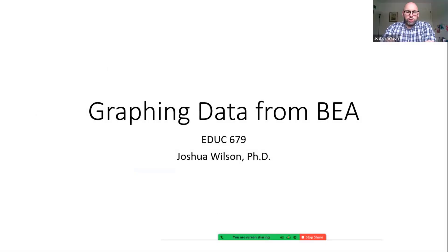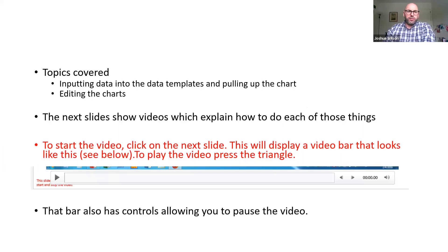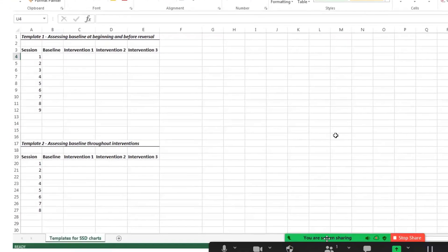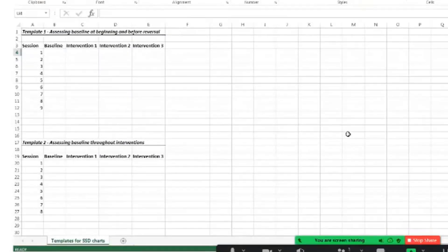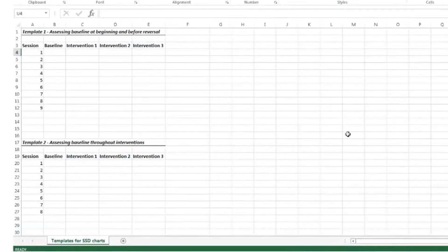This video will explain how to graph data from a brief experimental analysis of BEA, or any other single-subject research that involves multiple phases across time. We're going to cover how to input data into the data templates provided, how to pull up the actual chart after the data is entered, and how to edit those charts.